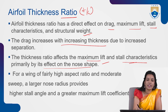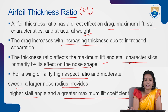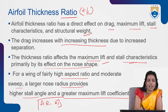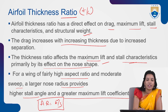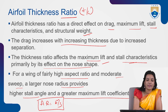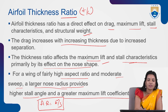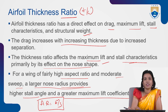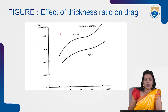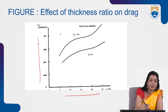For a wing of fairly high aspect ratio and moderate speed, a large nose radius provides a higher stall angle and greater maximum lift coefficient. When you have a higher aspect ratio — which is b²/S — with moderate speed and moderate sweep, you have a large nose radius that gives a higher stall angle and higher internal maximum lift coefficient. This effect of thickness ratio on drag can be seen in the plot of thickness ratio versus CD.